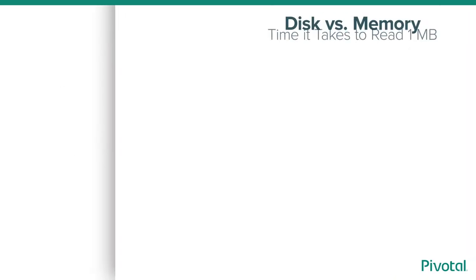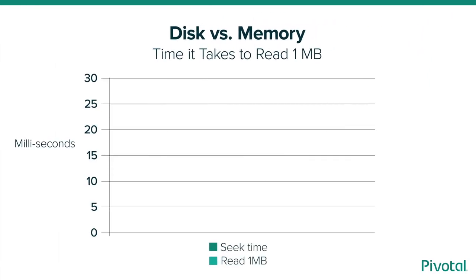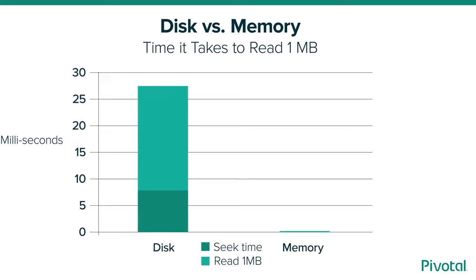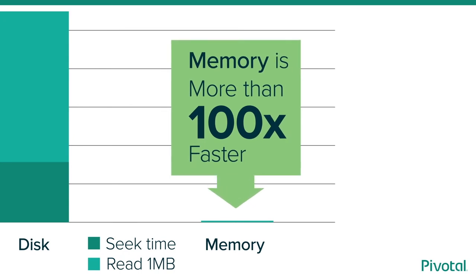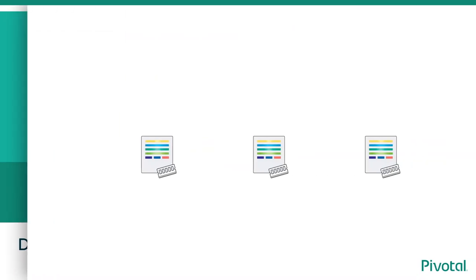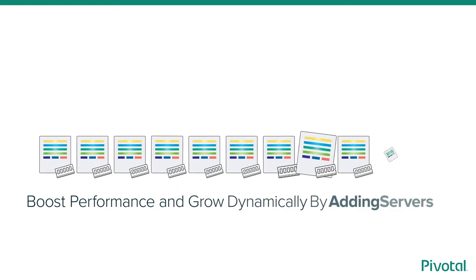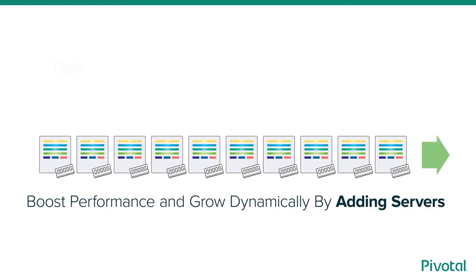Pivotal Cloud Cache uses in-memory technology which can perform multiple orders of magnitude faster. In this example, the time needed to read data is 500% faster than disk — even solid-state storage only performs a mere fraction as fast as memory. Caching data in Pivotal Cloud Cache can handle a large number of concurrent requests and respond quickly with low latency.